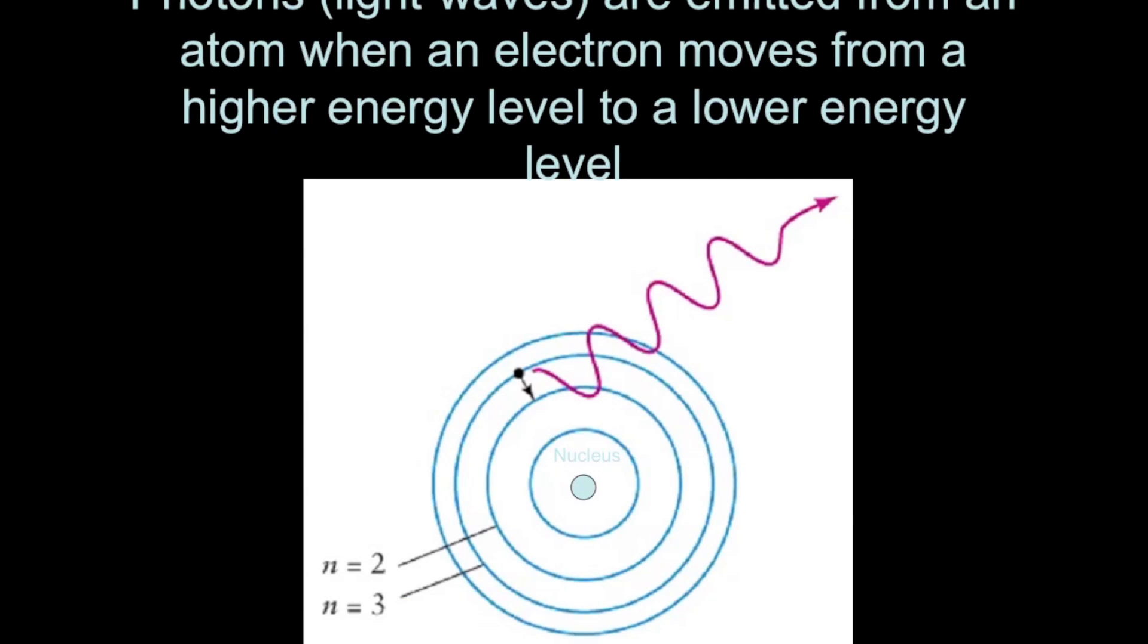We can also describe how electrons move from one orbit to another. In order to do that, electrons have to either gain or lose energy. And when that occurs, photons of light will either be emitted or absorbed by an atom.